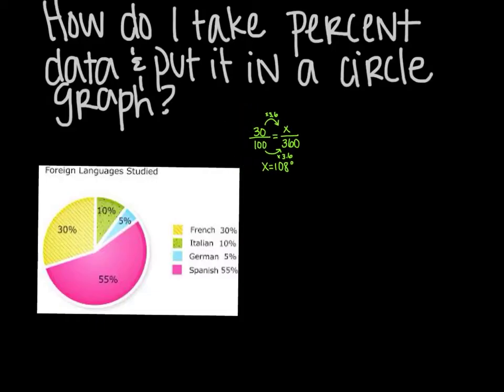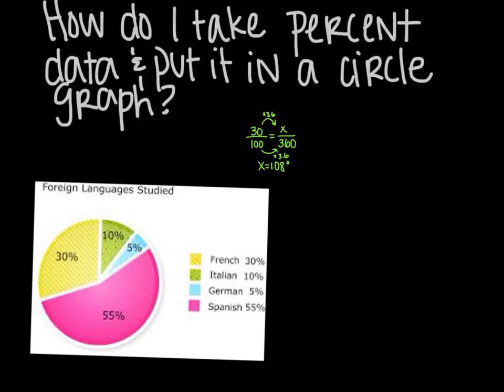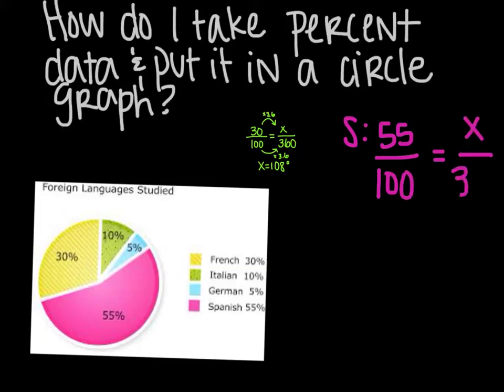So that was the French. We're going to do a couple more here because you'll have to basically do for every problem, every table. The next one is Spanish. I'll put a letter S here. You're going to write your proportion. So 55% is out of 100. And then x over your 360 degrees. To go from 100 to 360, you multiply by 3.6. So do the same thing.